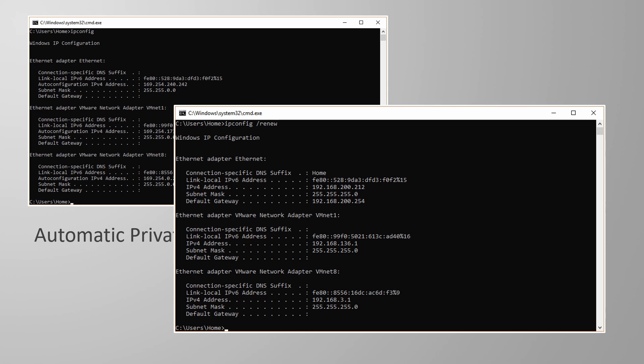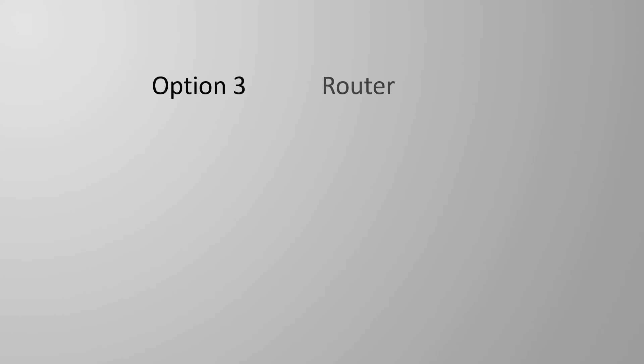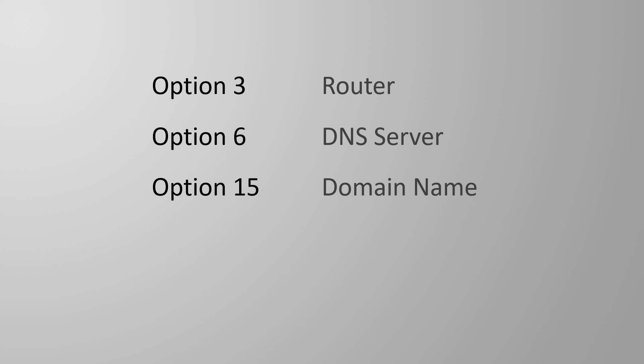DHCP servers aren't just good for handing out IP addresses — they can also hand out extra pieces of information called options. The router option gives the client the IP address of the default gateway. The DNS server option tells the client about DNS servers on the network. The domain name option tells the client which domain it's part of, for example networkdirection.net, which is quite important in Windows environments.